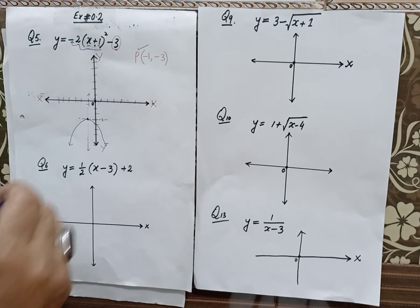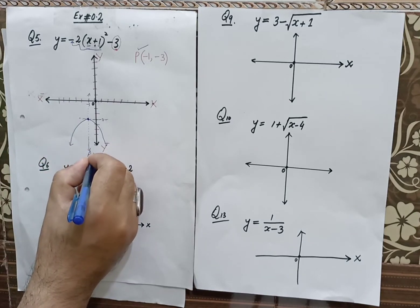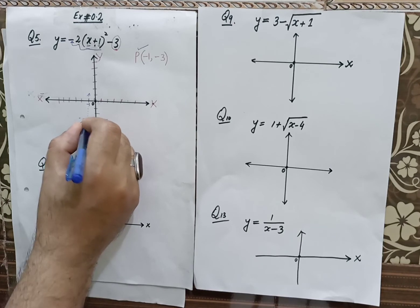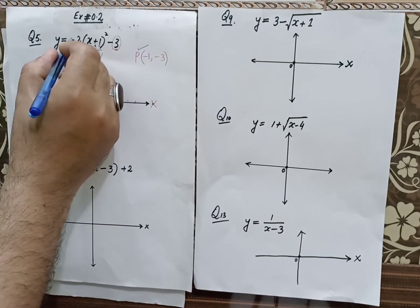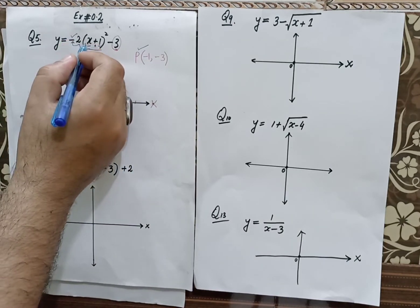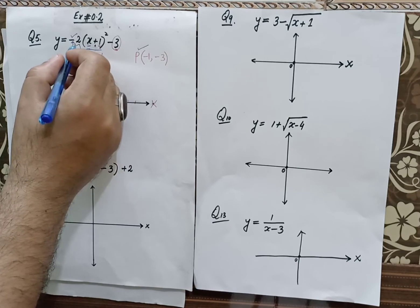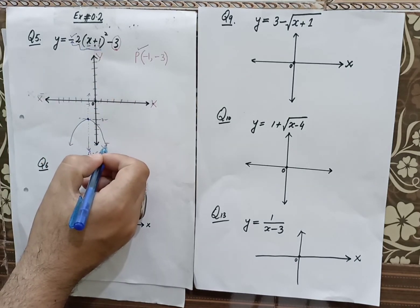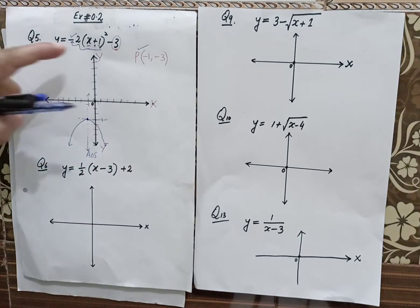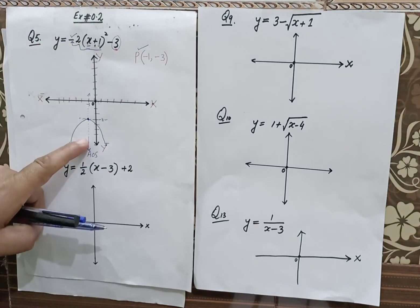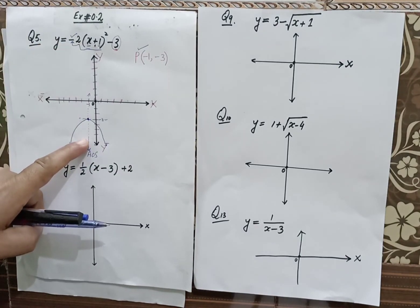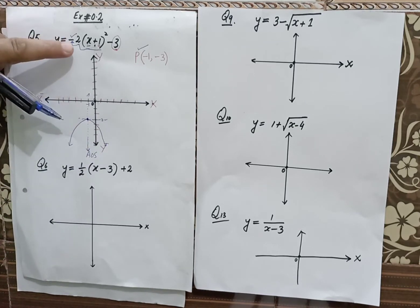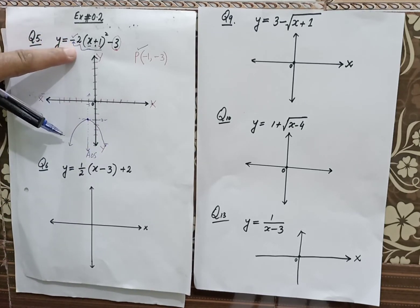Here we have the axis of symmetry defined — A.O.S. — just from the name: Axis of Symmetry. So the axis of symmetry is defined here. This is the graph of this given parabolic function.